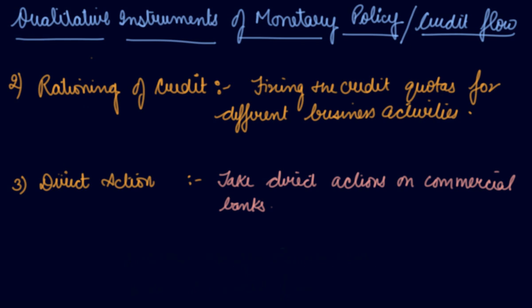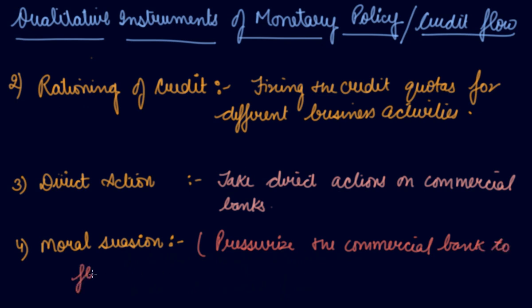The fourth is moral suasion. What does this mean? The central bank makes the member banks agree through persuasion or pressure to follow its direction on the flow of credit. The central bank pressurizes the commercial bank to follow the directions of central bank on the flow of credit.